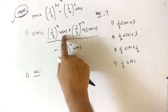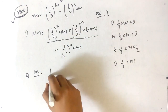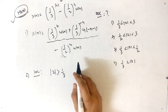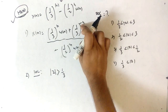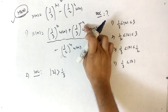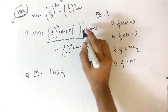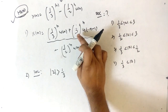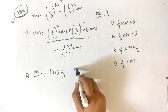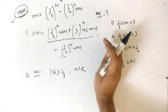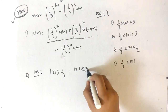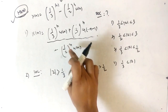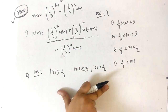Identifying ROC contributions: (1/3)^n·u(n) gives |z| > 1/3. For (1/3)^(-n)·u(-n-1), rewrite as 3^n·u(-n-1) using the less-than rule, giving |z| < 3. The term -(1/2)^n·u(n) gives |z| > 1/2. So the three ROC constraints are |z| > 1/3, |z| < 3, and |z| > 1/2.